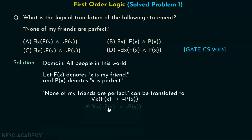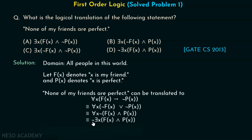We can write this as: not F(x) or not P(x), by converting the implication form 'p implies q' to 'not p or q'. Then, moving the negation outside gives us: not of (F(x) and P(x)). Finally, moving the negation one step further left gives us: not of there exists x, F(x) and P(x). You can see that option D is straight away the correct option — not of there exists x, F(x) and P(x). It says it is not the case that there is some friend of mine who is perfect.